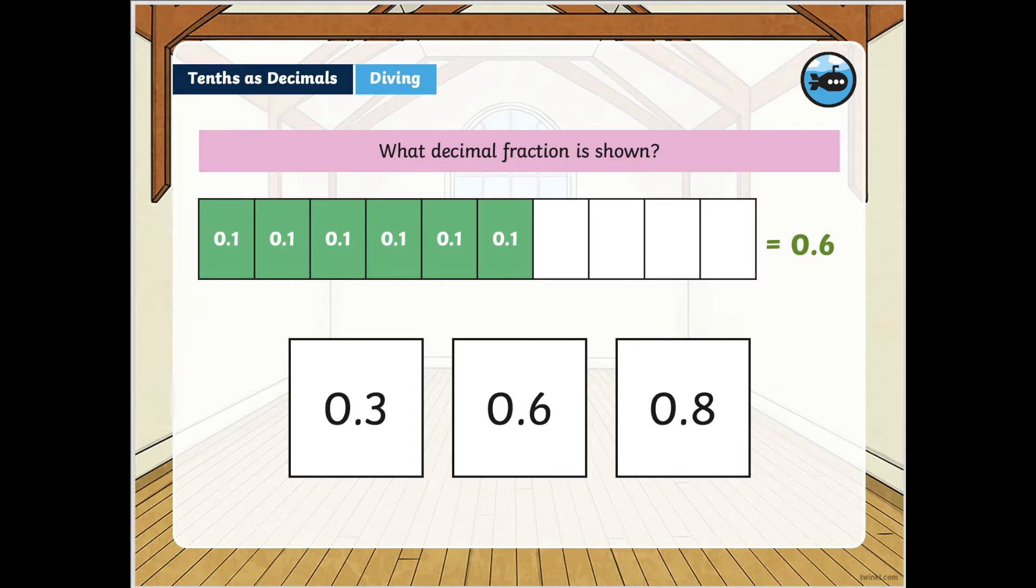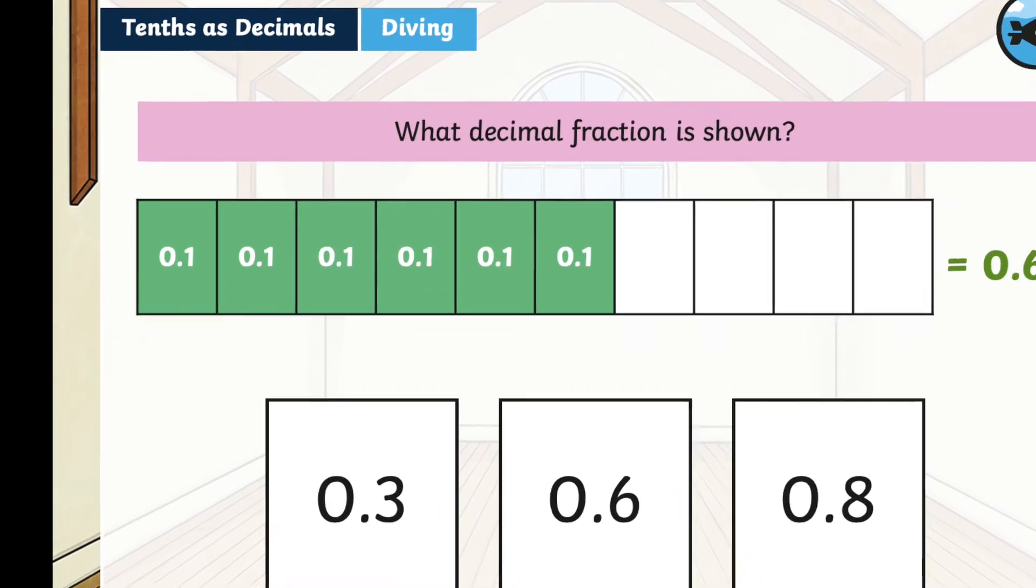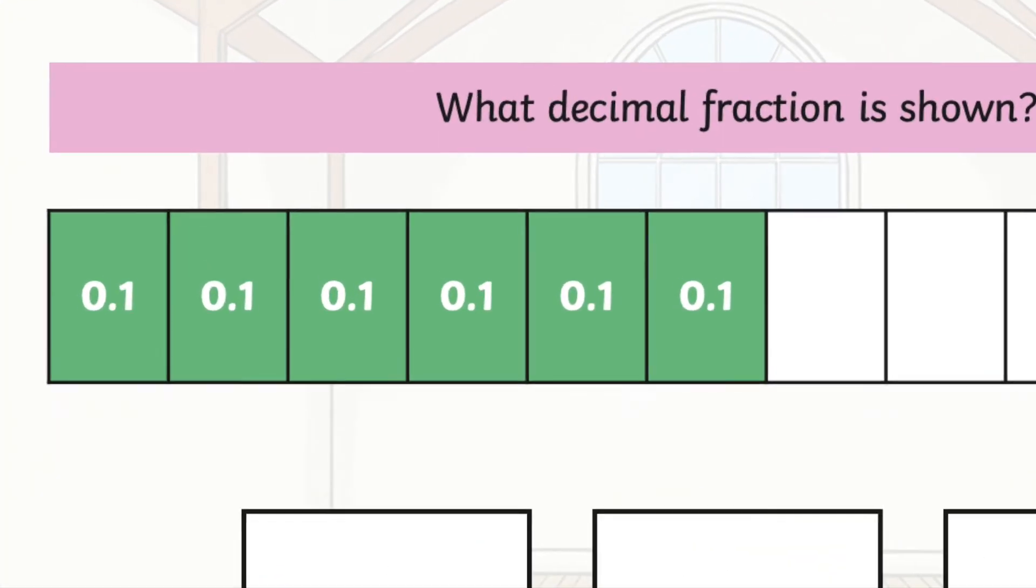Similarly here, six of the ten are colored in, therefore the decimal fraction is 0.6, and we can see that each box is worth 0.1.